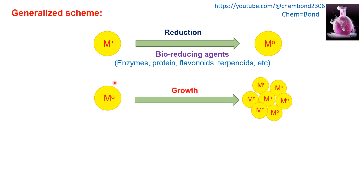In the second step, the metal in zero form undergoes nucleation and growth of particles, producing agglomerated nanoparticles. It should be clear that the size of these agglomerated particles should not exceed the nano size range.